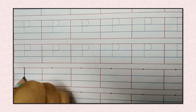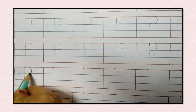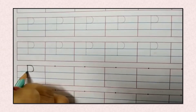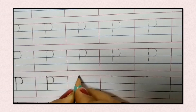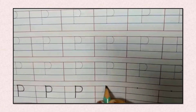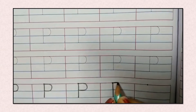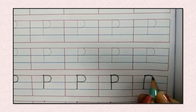Now we will write P with a single dot. First, put your pencil on the dot and make a standing line. Then go to the top of the standing line and make a backward curve like this, to the middle of the standing line. That is P. Standing line, go to the top, make a backward curve — that is P.